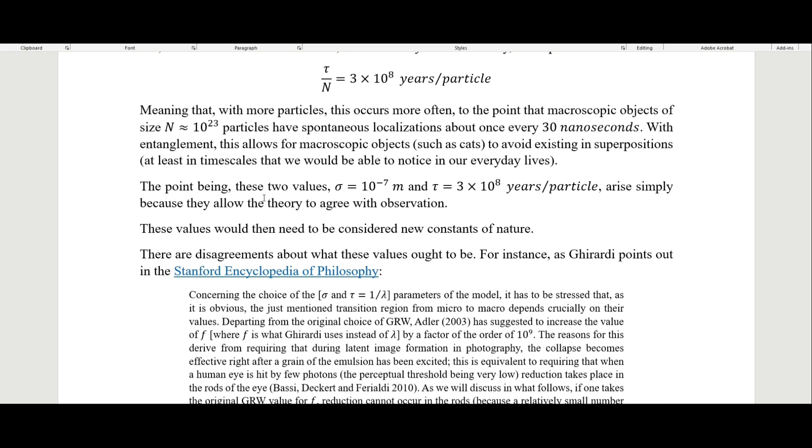The point here being that these two values, this 10^-7 meters and this 300 million years per particle, arise simply because they allow the theory to agree with observation. These values would then need to be considered new constants of nature, and this is one of the ontological commitments that this theory is going to have to make, and probably one of the weaknesses of the theory is that we have to posit these two new constants of nature.